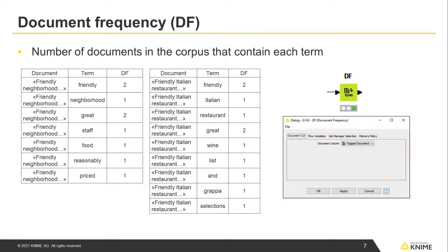The DF node calculates the document frequency as the number of documents in the corpus that contain each term. In our mini-corpus of two documents, the words great and friendly occur in both documents, and their document frequency is 2. The other words occur in only one document, and thus their document frequency is 1.